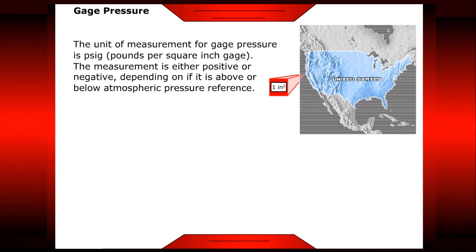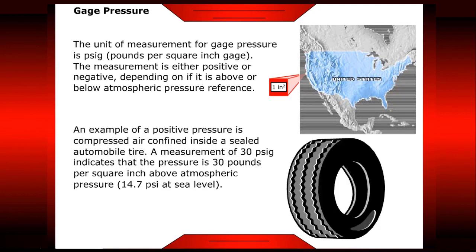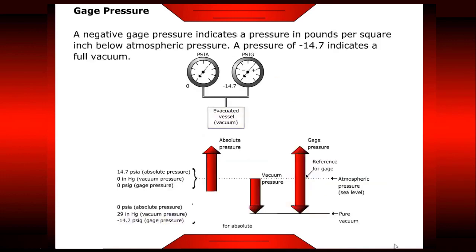An example of a positive pressure is compressed air confined inside a sealed automobile tire. A measurement of 30 pounds per square inch gauge indicates that the pressure is 30 pounds per square inch above atmospheric pressure. A negative gauge pressure indicates a pressure in pounds per square inch below atmospheric pressure. A pressure of negative 14.7 indicates a full vacuum.